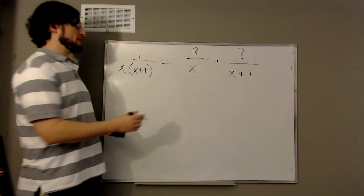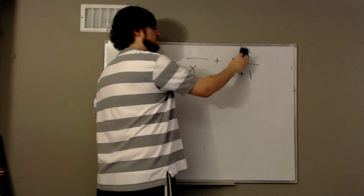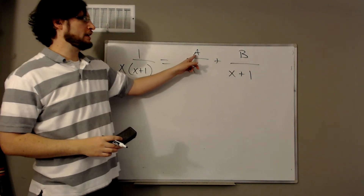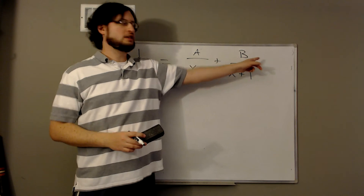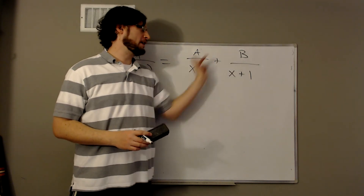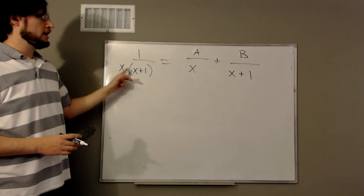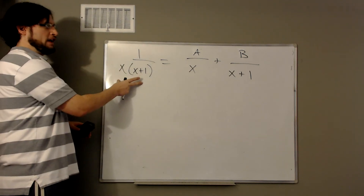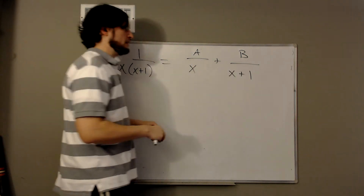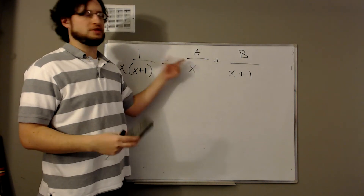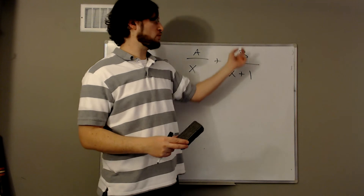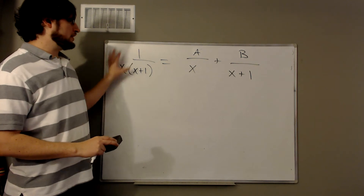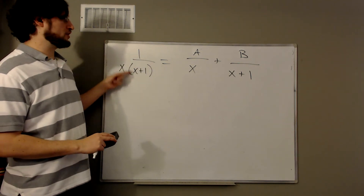So in this particular case, I'm looking for a constant a and a constant b such that a over x plus b over x plus 1 equals 1 over x times x plus 1. If I can do that, then to integrate the left-hand side I just have to integrate the two pieces on the right. The first piece is just like 1 over x, which is a natural log, and the second is also like 1 over x, which is a natural log.